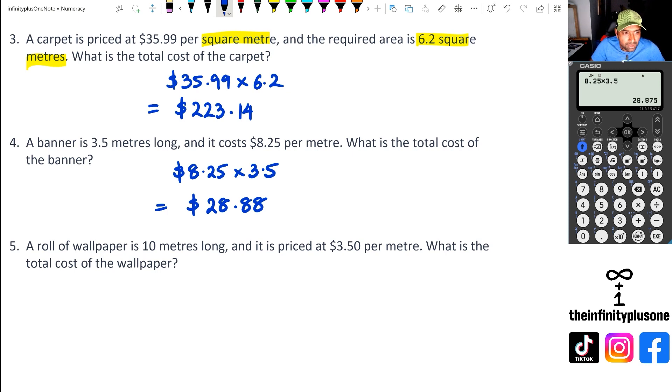Looking at question 5. We've got 10 meters long, and we've got $3.50 per meter. So $3.50 times 10. That's a nice round number of $35. So those are just some questions for multiplying decimals in context.